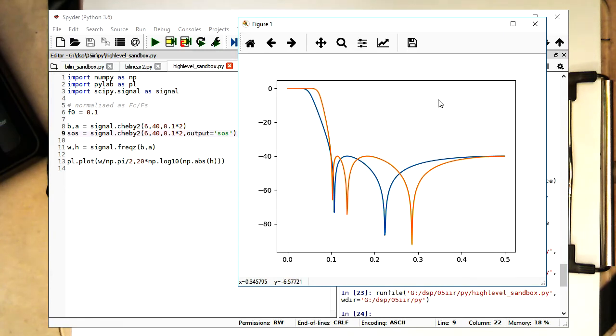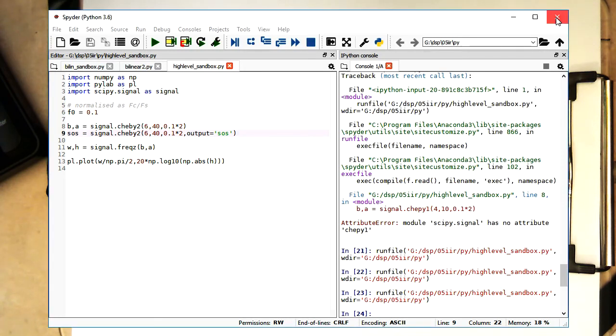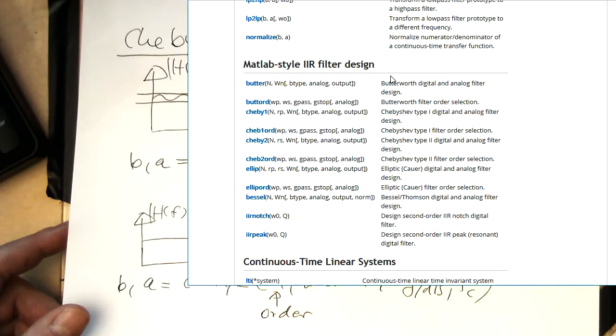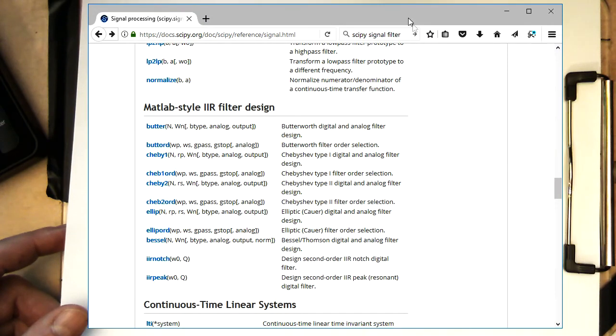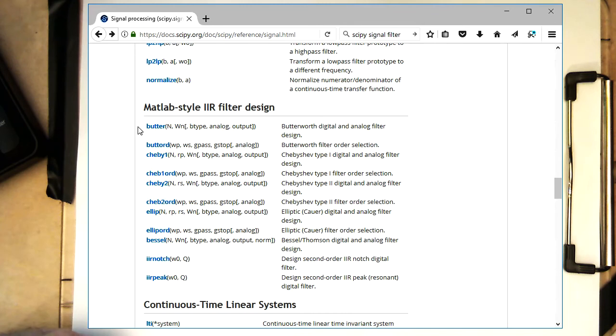And so, that's a very nice feature of the Chebyshev filter. And so the Python has a section of MATLAB style IIR design, where we've got here the Butterworth, the Chebyshev. There's also the elliptical filter, Bessel filters.